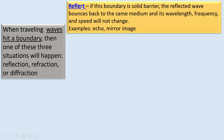A wave will reflect if the boundary is a solid barrier. The reflected wave bounces back to the same medium, and its wavelength, frequency, and speed will not change. Examples include echo for sound waves and mirror image for light waves.